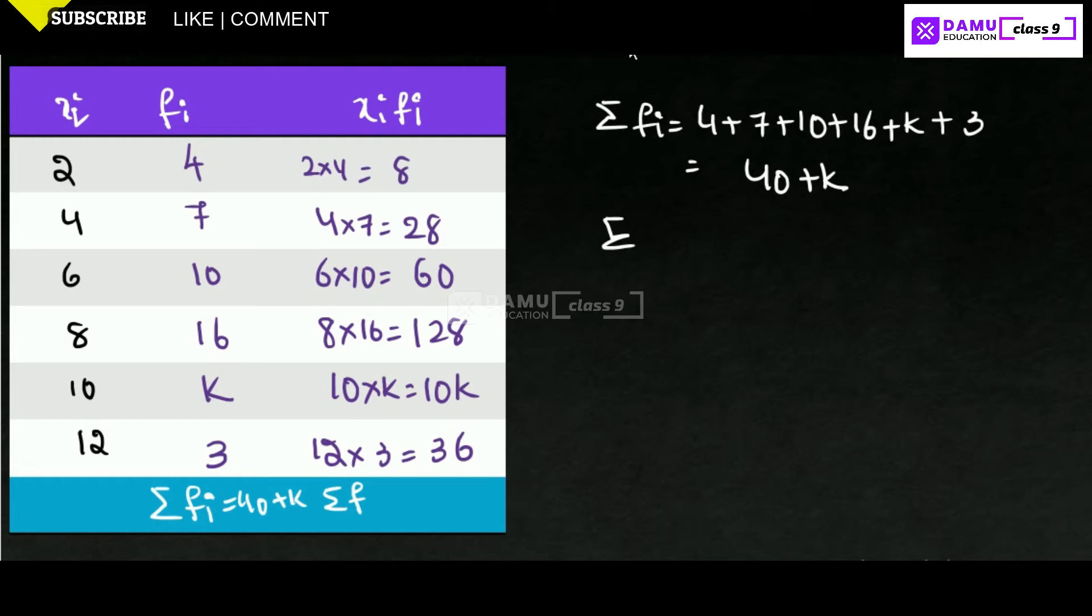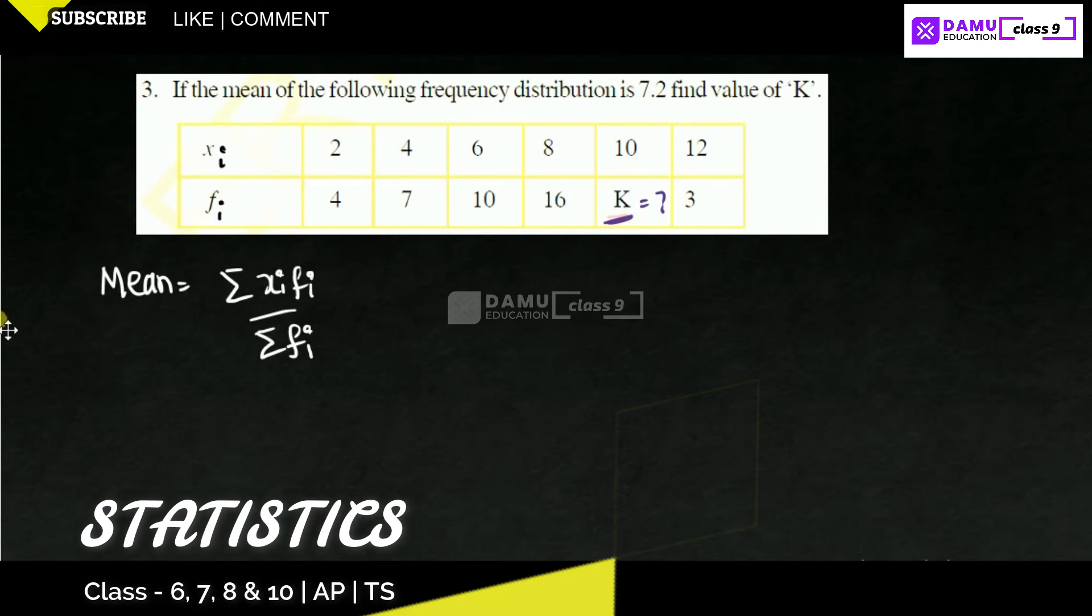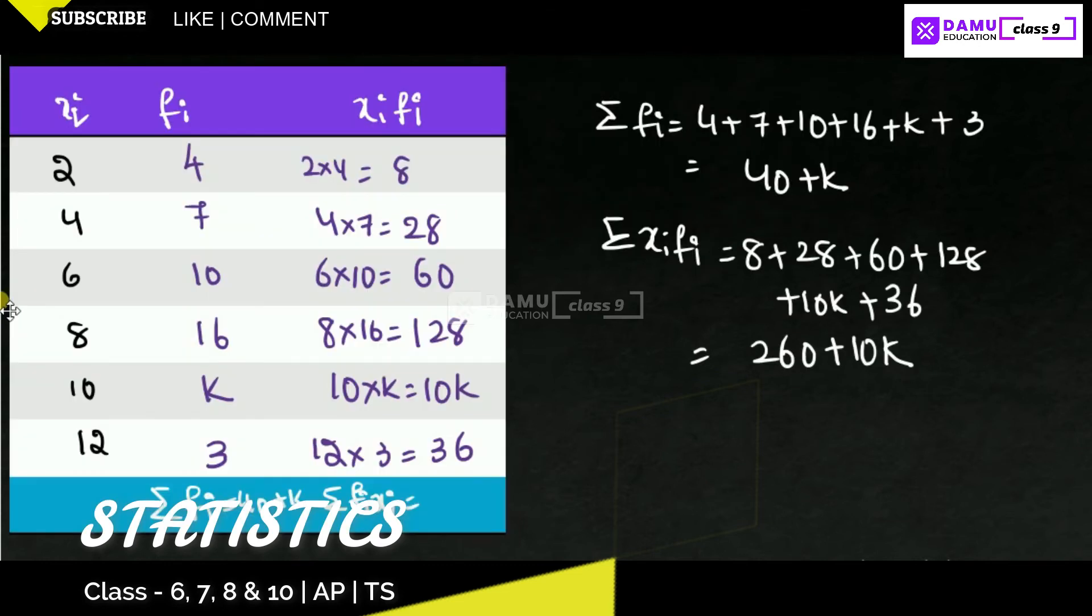Summation of xi fi will be equal to 8 plus 28 plus 60 plus 128 plus 10k plus 36. What is this value? 8 plus 28 plus 60 plus 128 plus 36. We need to add only numbers. That is 260 plus 10k. What they are telling here is, we got the values of this value will be equal to 7.2 as given in the question.